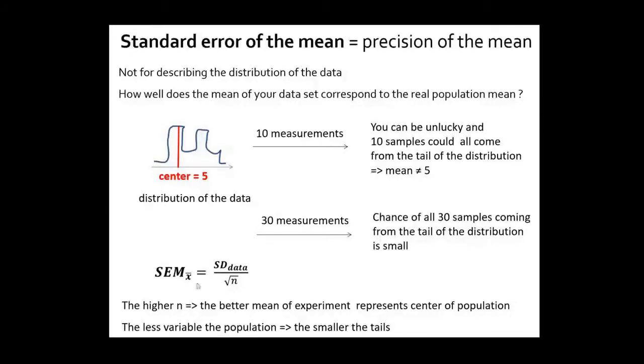How do you calculate it? You calculate it based on n. That's what we explained here. The more measurements you take, the higher n, the better the mean will represent the actual population center. And it also depends on the spread in your population. If you have a really spread out population then you have a higher chance of having all measurements from a tail. When you have a very narrow population then you have lower chances of having that. So the standard error of the mean tells you how well your mean represents the center of the population.